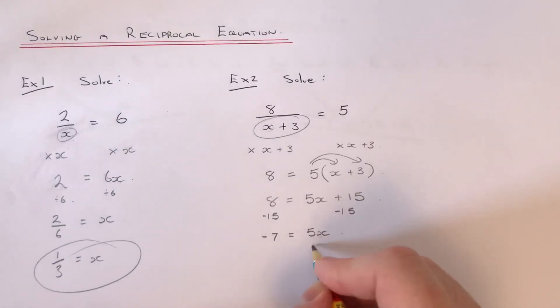And then get rid of the 5 away from the x by dividing by 5. So we get minus 7 fifths equals x.